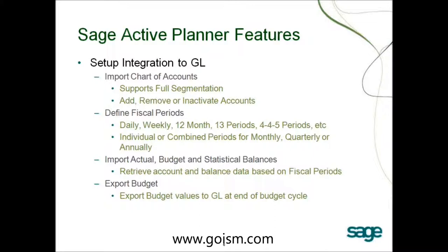If you add a new account number to your general ledger, that same account number can automatically be updated inside your budget environment whenever you tell it to do so. It means there's no need to define your fiscal periods — whatever you have set up in your GL, whether daily, weekly, 13 periods, 4-4-5, or whatever you might use, that's what we'll have set up in Active Planner. And when you're done with your budget, you can export your budget values right back to your general ledger so your budgets and actuals live next to each other.